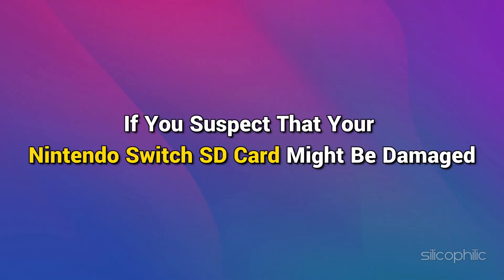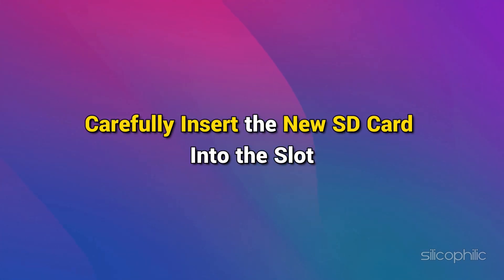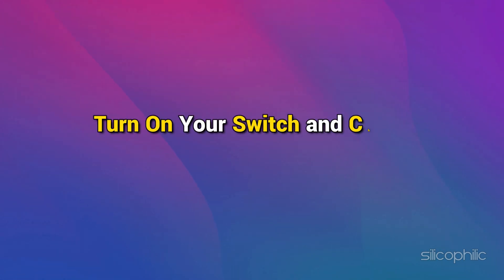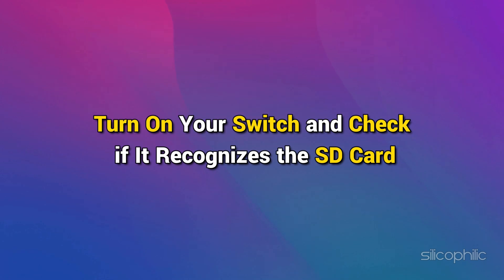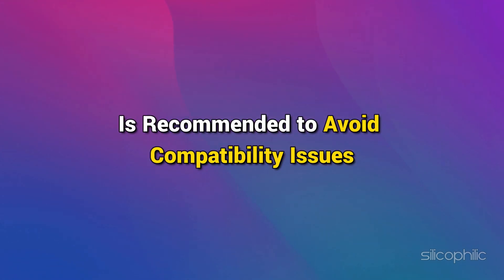Method 4: Try another microSD card. If you suspect your Nintendo Switch SD card might be damaged, check it for any scratches or physical defects. If you notice any issues, consider replacing the card. Carefully insert the new SD card into the slot, making sure it clicks securely in place. Turn on your Switch and check if it recognizes the SD card. Remember, using officially licensed SD cards for Nintendo consoles is recommended to avoid compatibility issues.